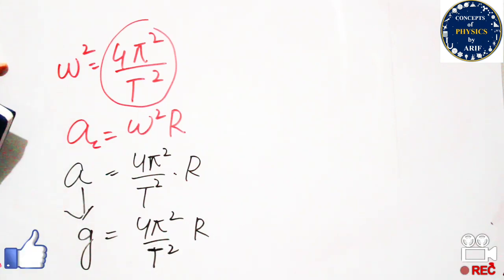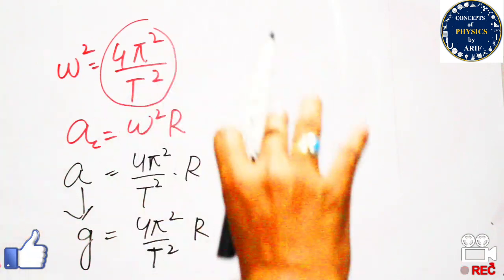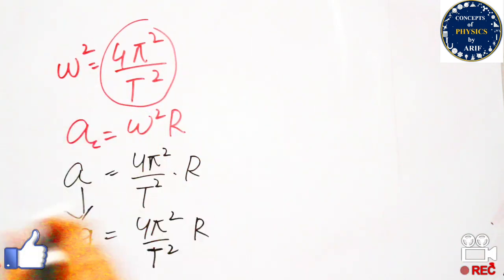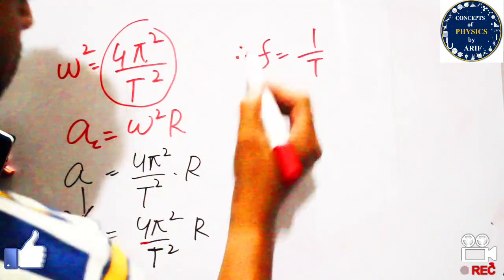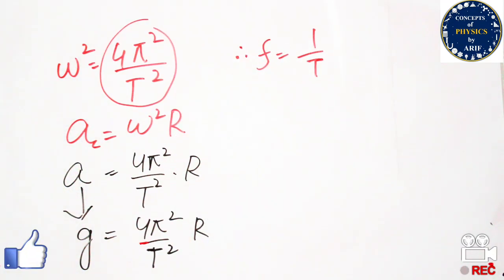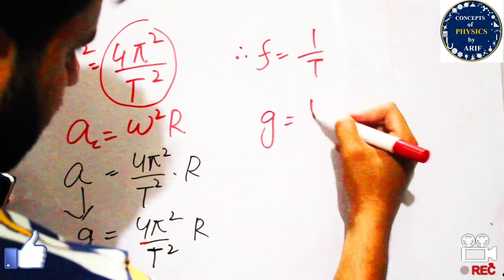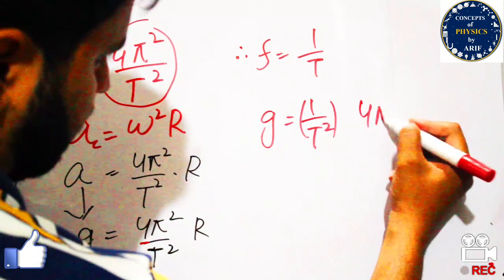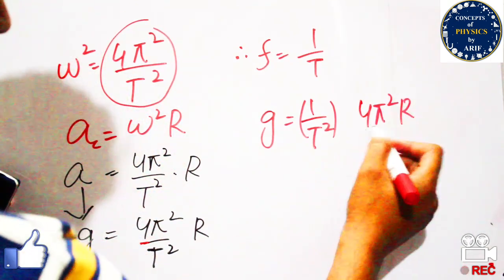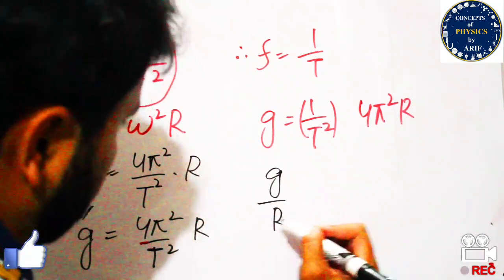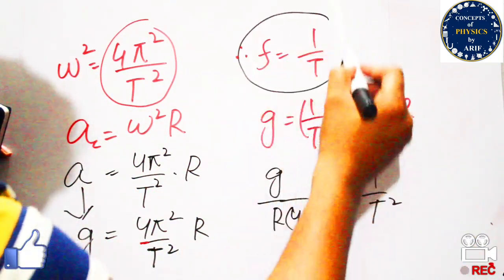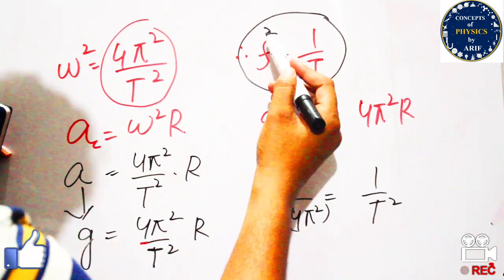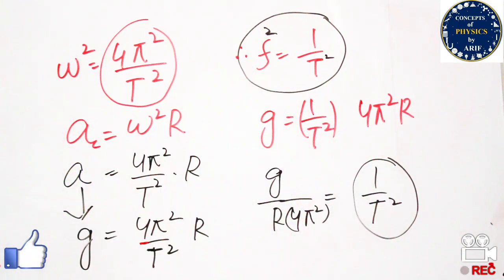We need to calculate the frequency — at what frequency we must rotate the artificial satellite in order to obtain artificial gravity. The formula for frequency is f = 1/t, or equivalently t = 1/f. From g = 4π²r / t², we can rearrange: g / (4π²r) = 1/t². Since 1/t is frequency, 1/t² equals f². So: f² = g / (4π²r).